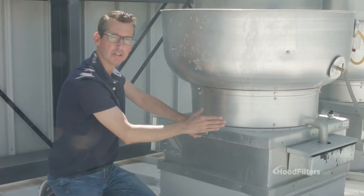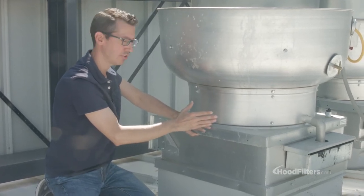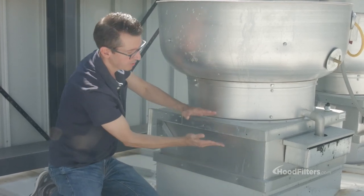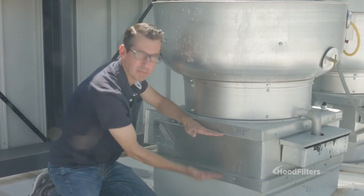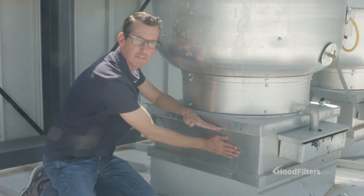Now the other part that you're going to need to know about is the curb. And what a curb is, is just the box that's attached to the roof that the fan sits on. So below here is what would be considered the curb. The part that's attached to the roof is the curb.